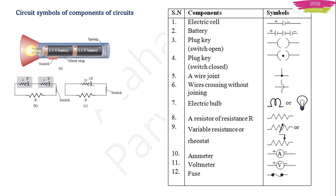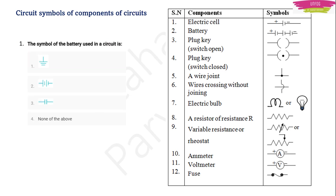When they ask about the symbol of a battery in an exam, remember that a battery is a group of cells — two or more cells will be present. So if the options show a single cell and a group of cells, tick the group-of-cells option. Don't get confused: only two or more cells together make a battery.